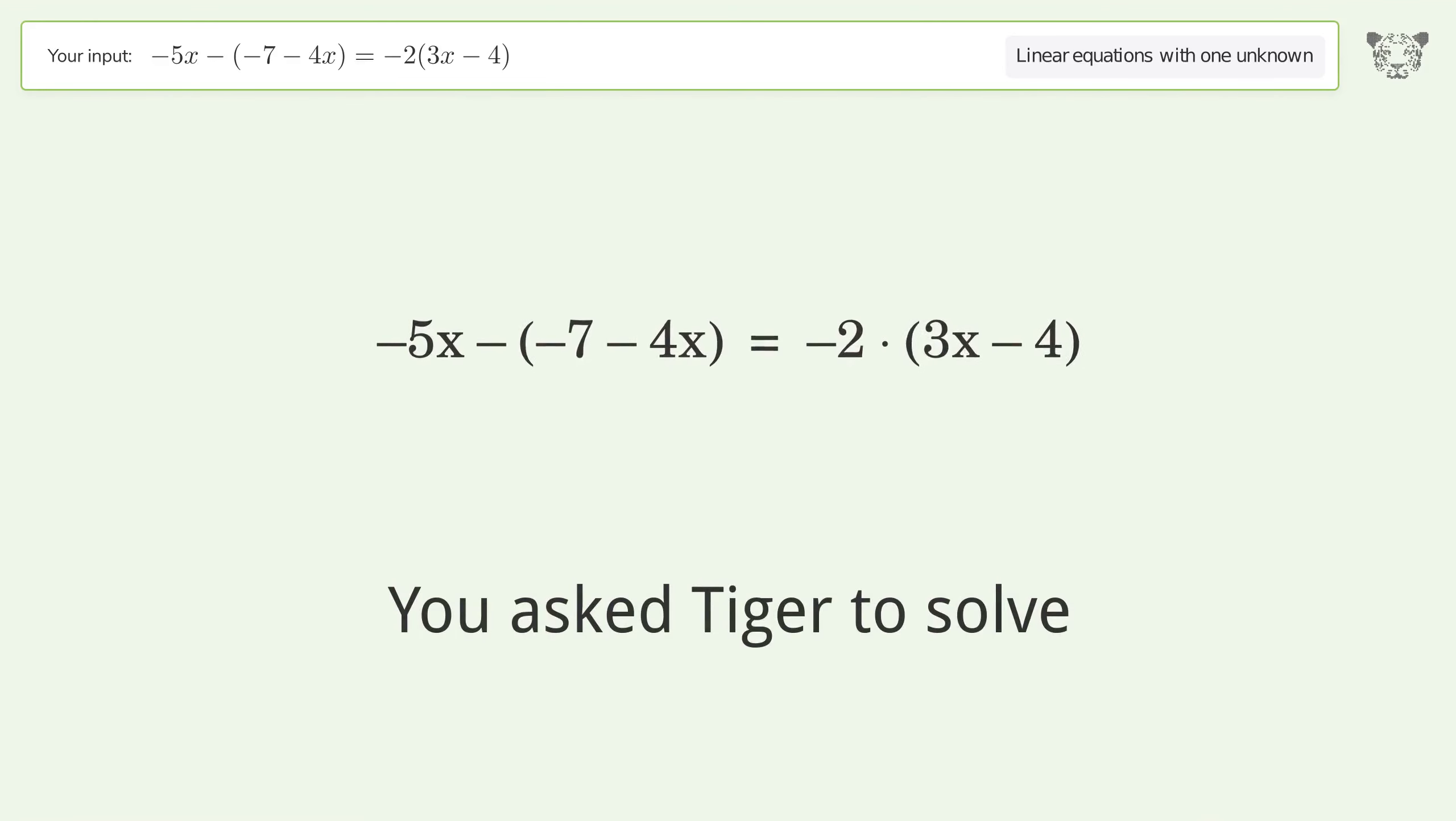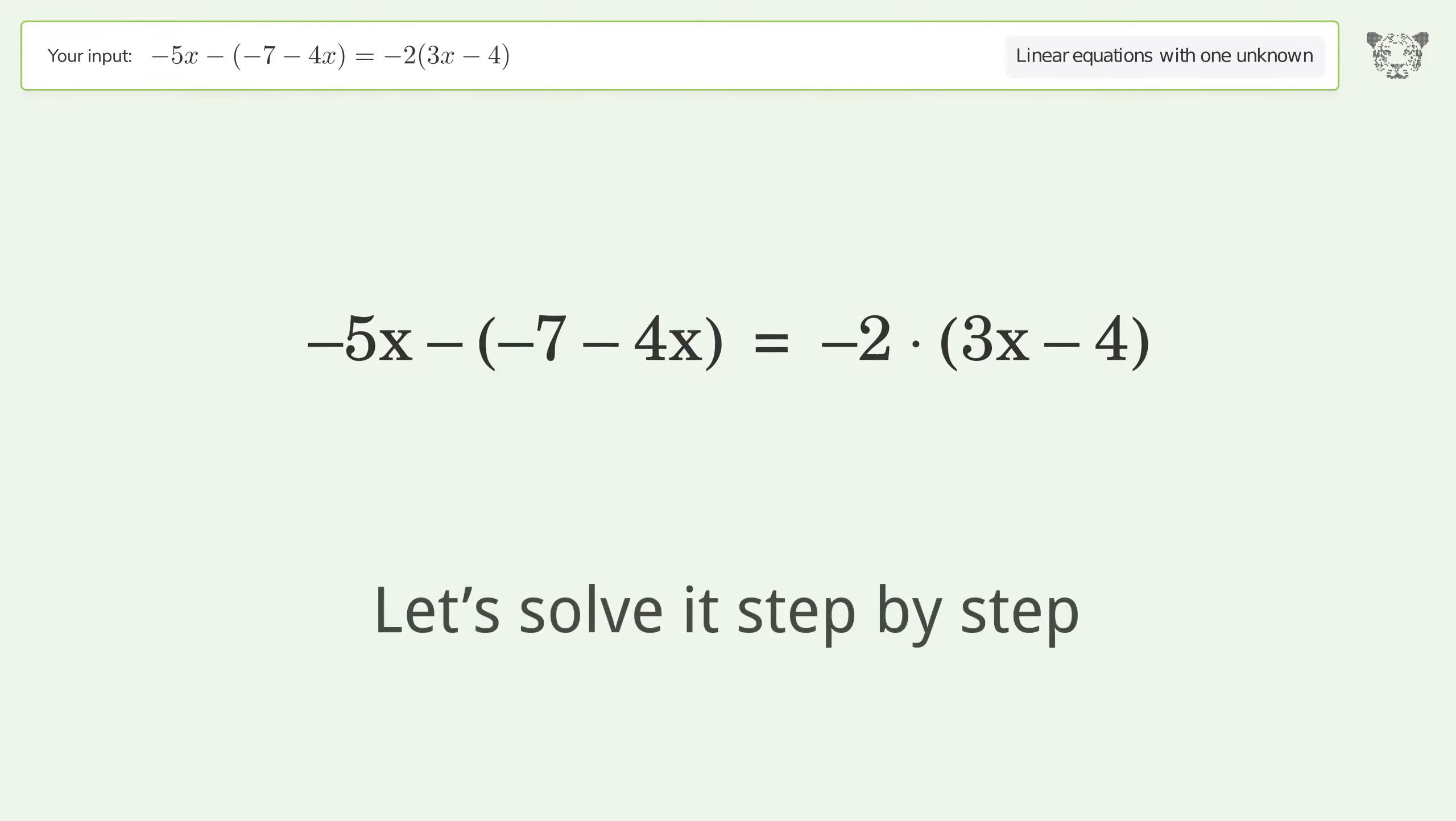You asked Tiger to solve this problem which deals with linear equations with one unknown. The final result is x equals 1 over 5. Let's solve it step by step.